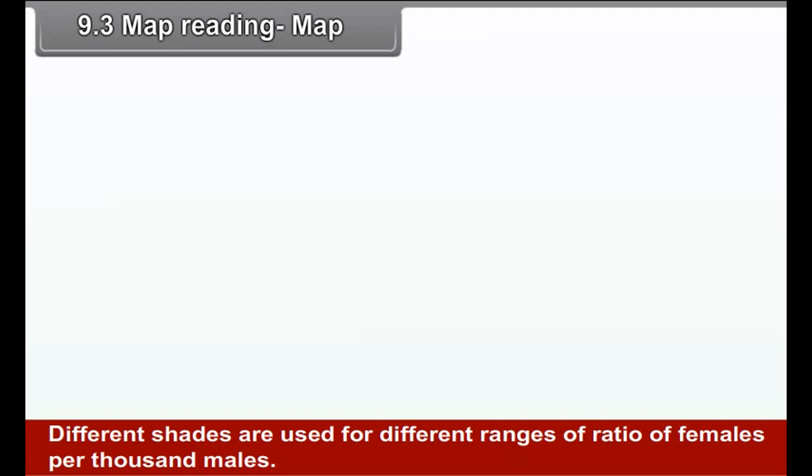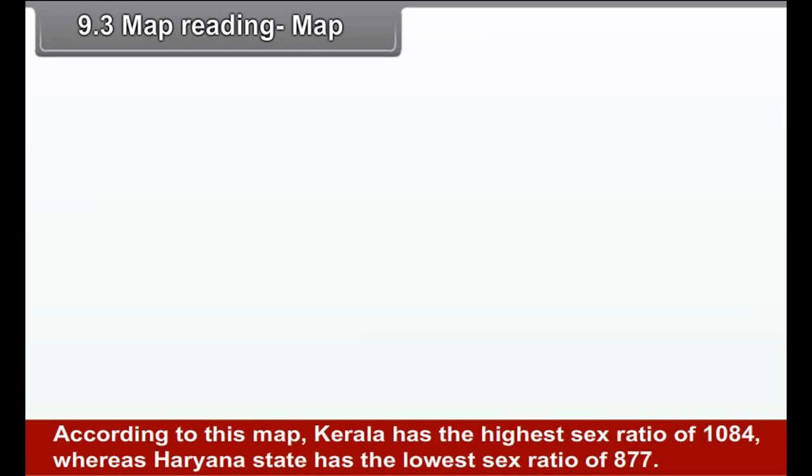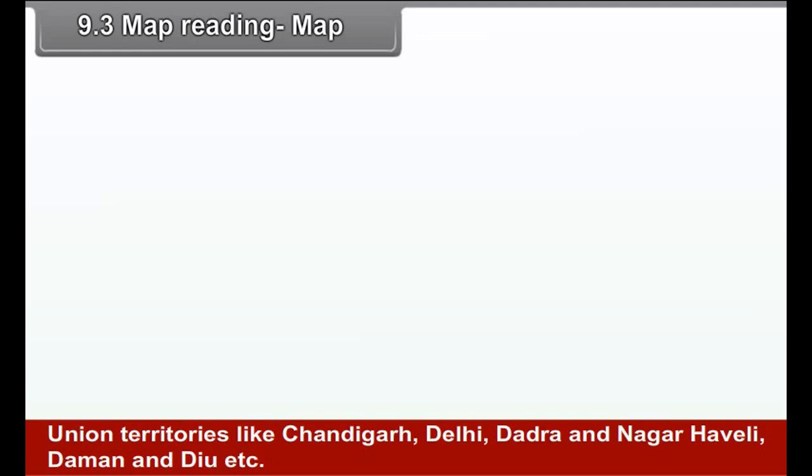Map in figure 9.2b. It is a map of India that has a very specific theme, i.e., sex ratio of each state of India in the year 2011. Different shades are used for different ranges of ratio of females per thousand males. Besides shades of color, actual sex ratio of each state is also given.